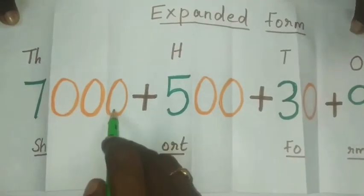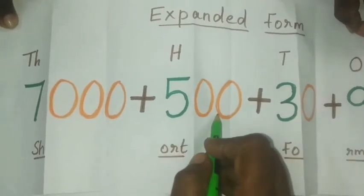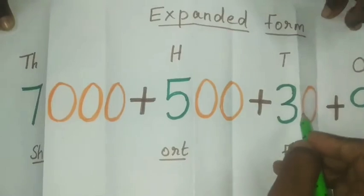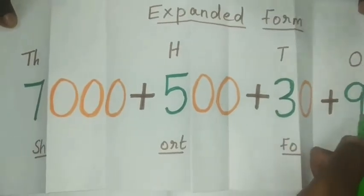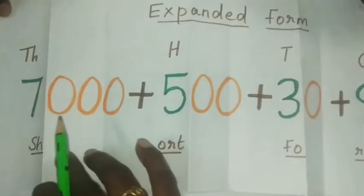So, 7000 plus 500 plus 30 plus 9. This is the expanded form.